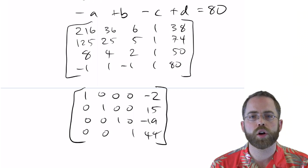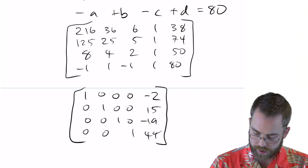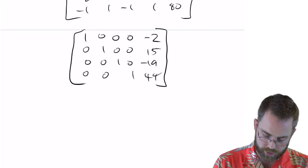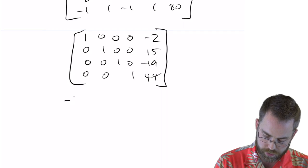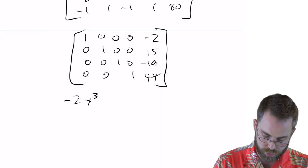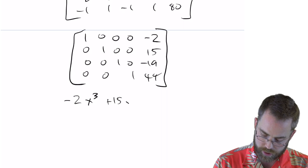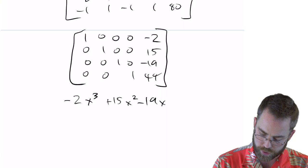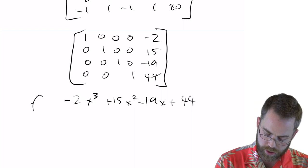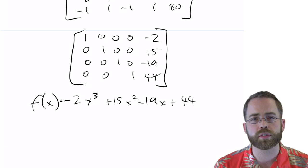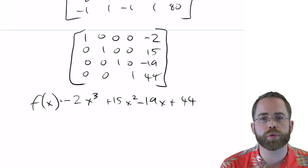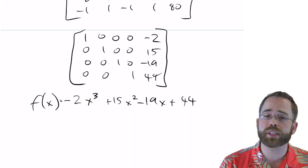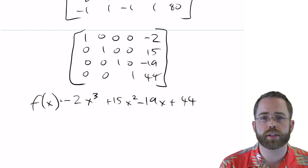So there I have solved for a, b, c, and d. Meaning that those points go through this polynomial with negative 2 and 15 and negative 19 and 44. That if I make that equation, it will go through those 4 points. And this really is what the calculator is doing with cubic reg. It's just doing it a little bit with more wiggle room.